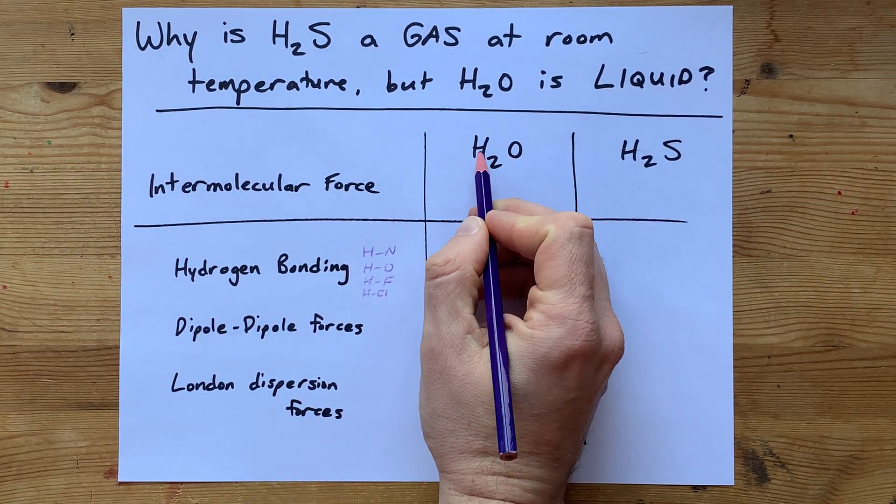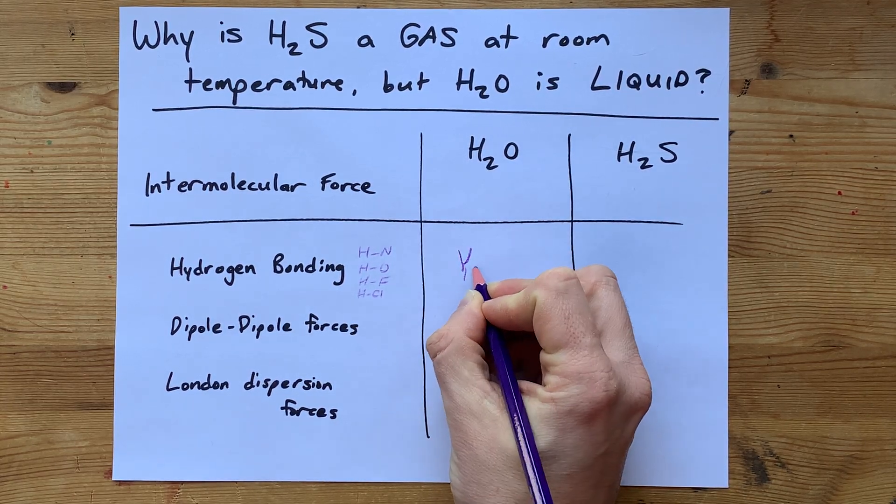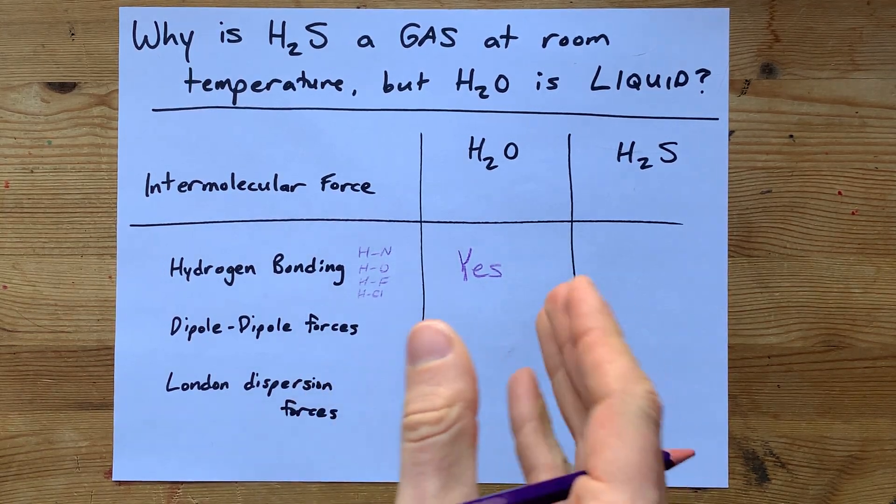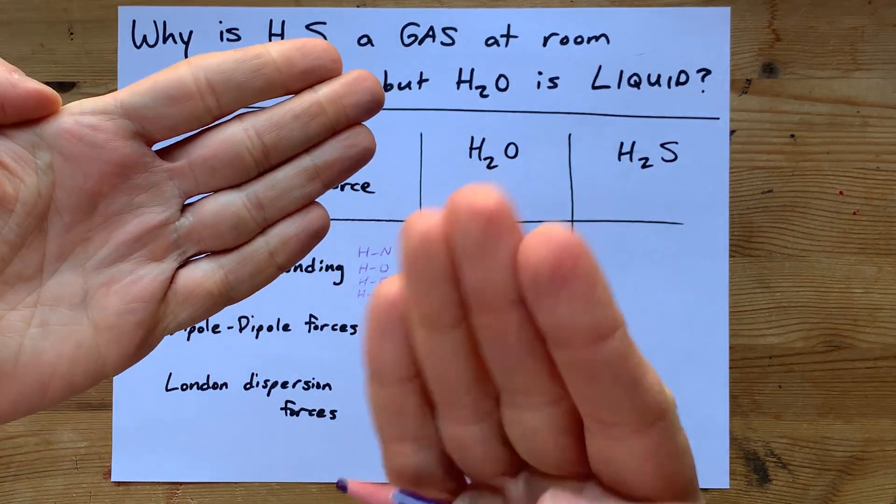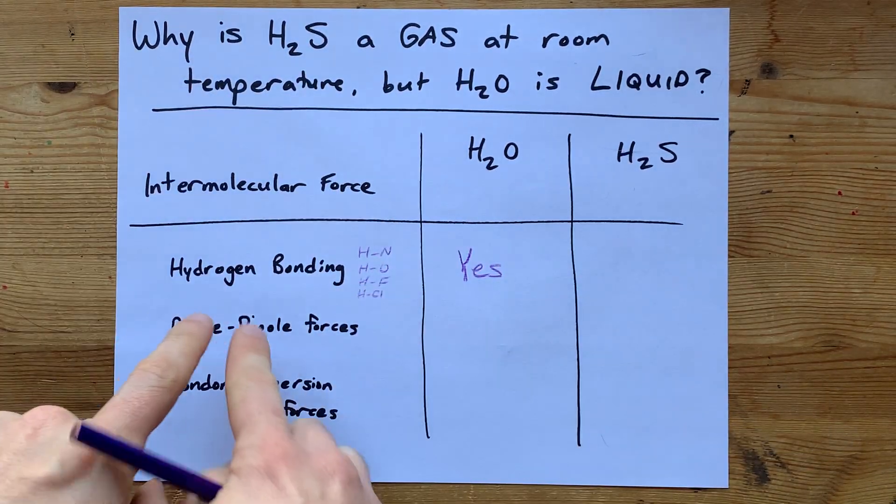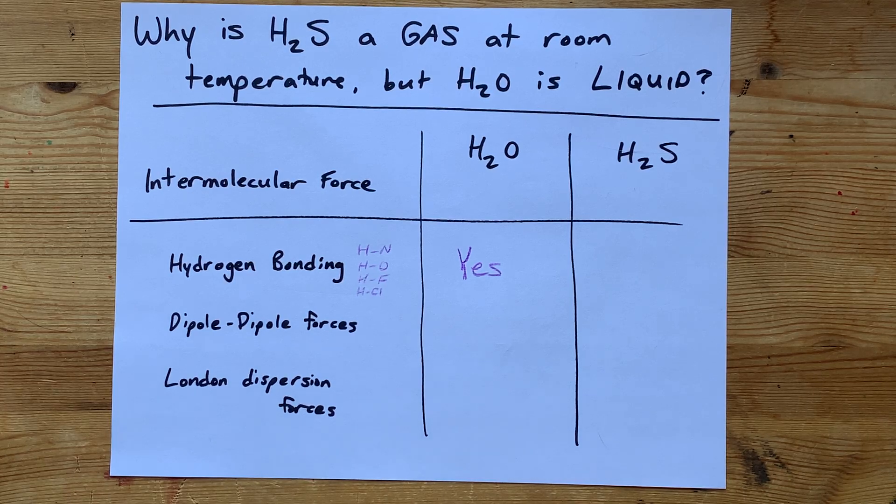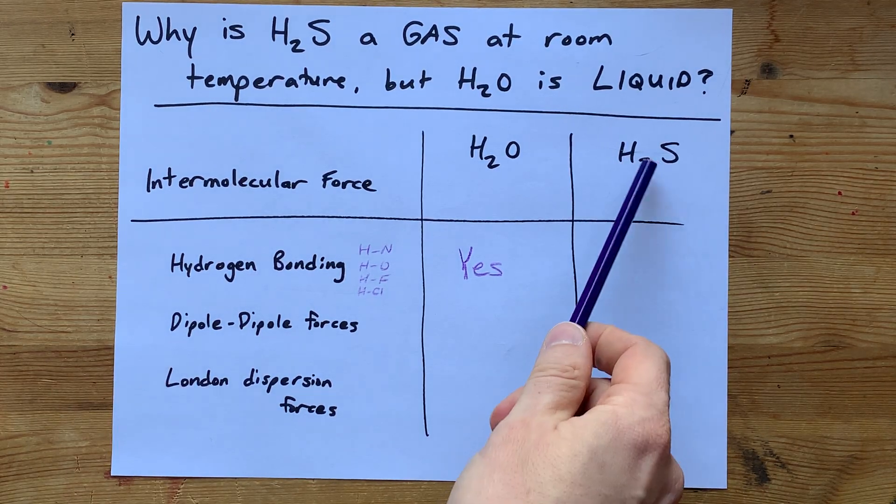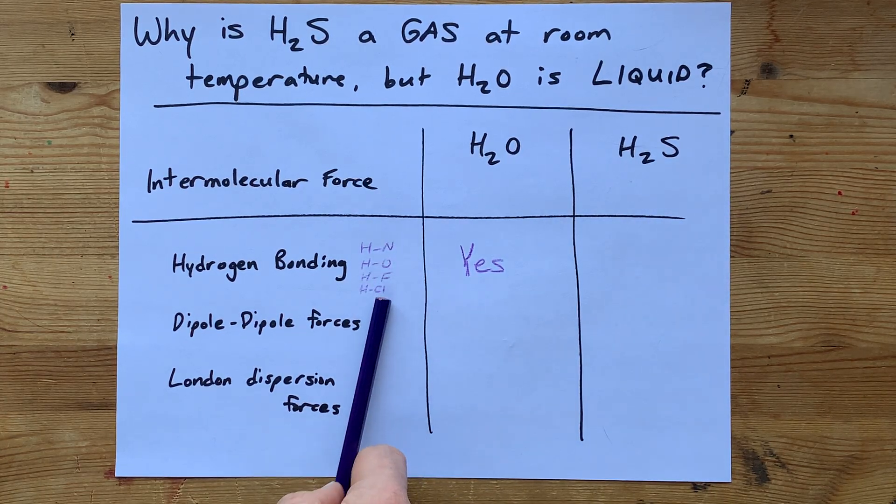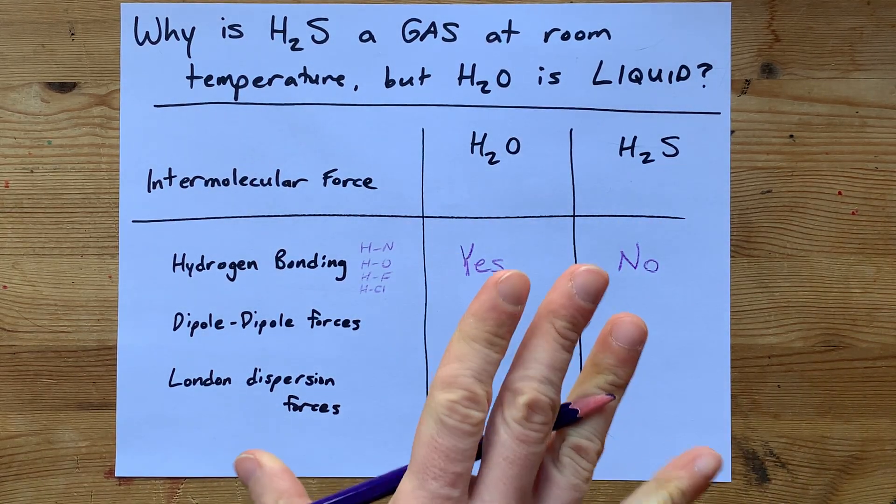In water, you have hydrogens directly bonded to oxygen, so water does have hydrogen bonding between the molecules. And by that, I mean one molecule of water and another molecule of water stick together more because of the intermolecular force called hydrogen bonding. But H2S does not have hydrogen directly connected to one of these electronegative atoms, and so it does not have hydrogen bonding.